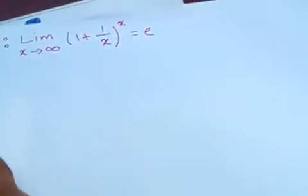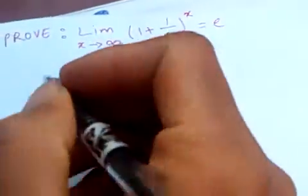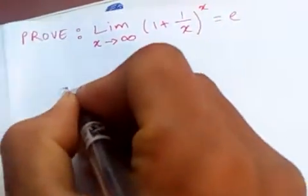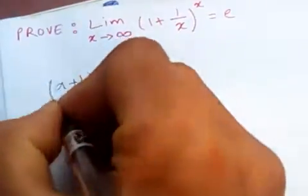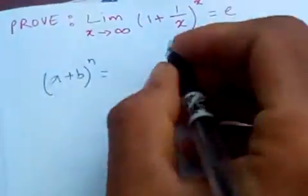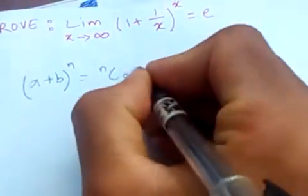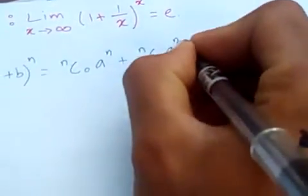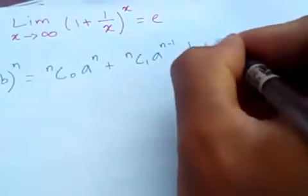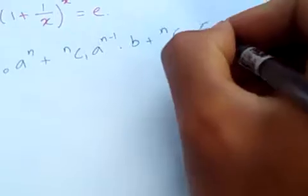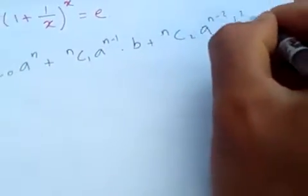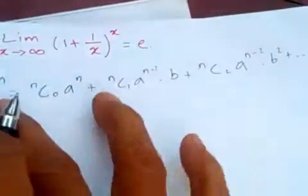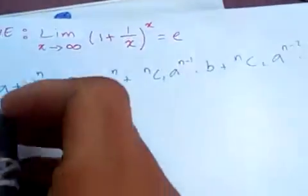First of all, let us discuss the binomial theorem. We know that the binomial theorem states: (a + b) to the power n is equal to nC0 times a to the power n, plus nC1 times a to the power n minus 1 times b, plus nC2 times a to the power n minus 2 times b squared, and so on. This is the binomial theorem, and we are going to apply it here.